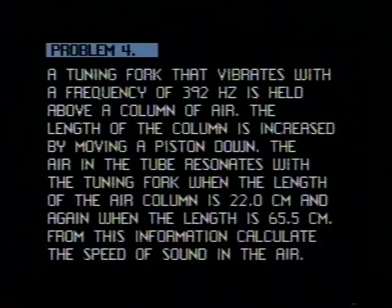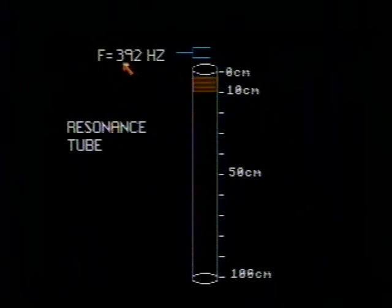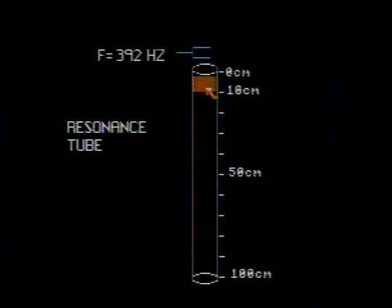Let's take a look at that column of air first. We have a tuning fork that resonates at a frequency of 392 hertz held above the column of air. A piston in the column of air will move downwards, increasing the length of this closed tube. We will hear resonance at two points as evidenced by an increase in the loudness of the sound at those resonance points.